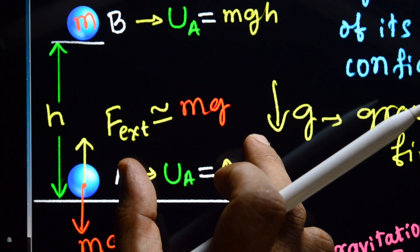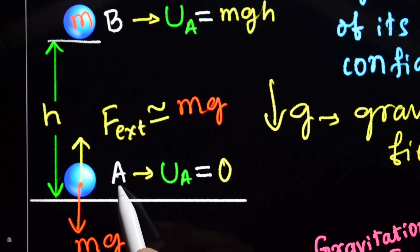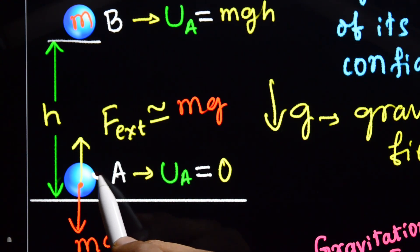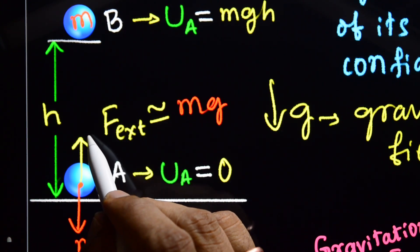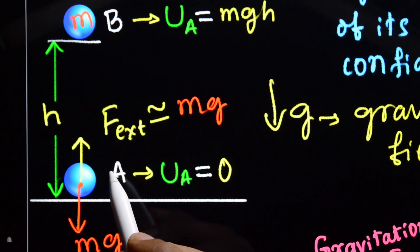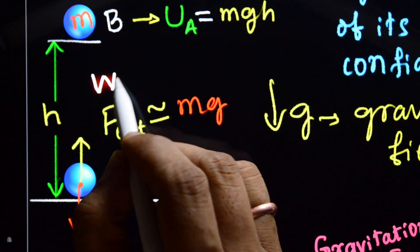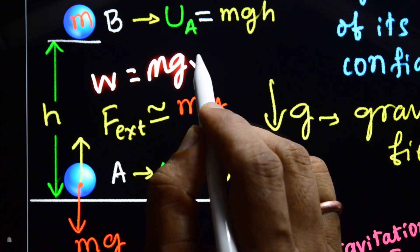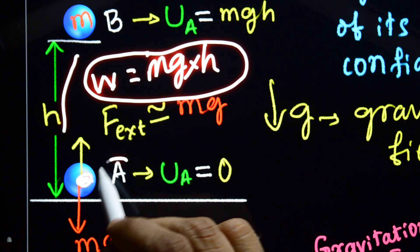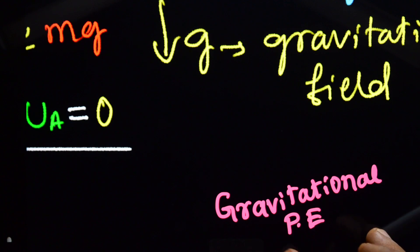Initially the body is on the ground, and its potential energy is zero. Now, an external force equal to mg is applied — without accelerating — to lift the body from position A to position B. The work done by you to lift that body from position A to position B is W = mg × h. This work done is stored as gravitational potential energy.